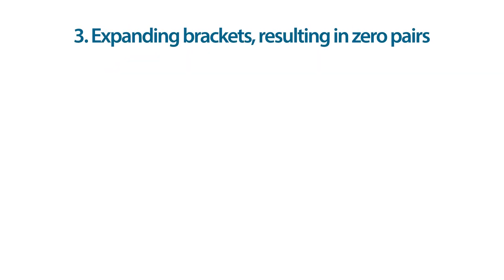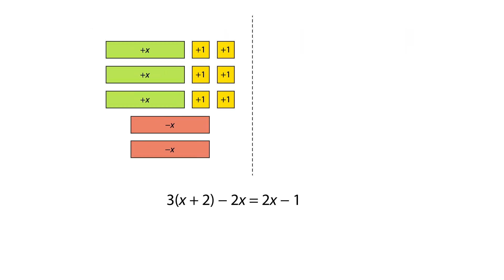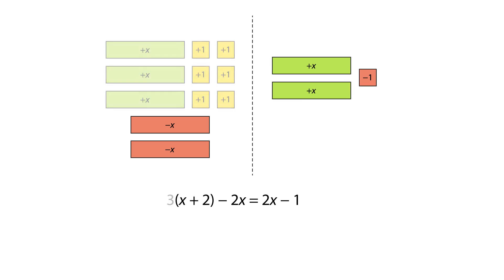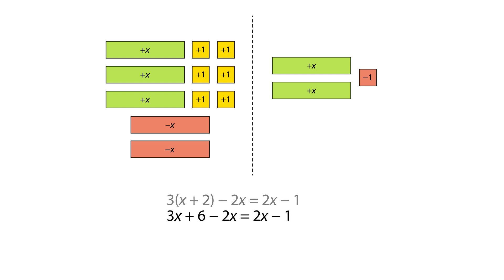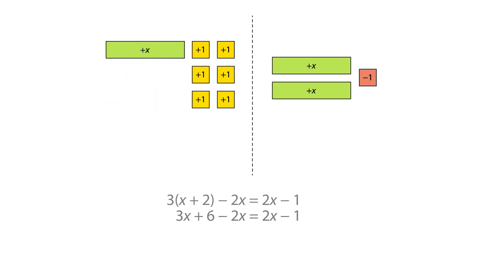In this next example, let's look at an equation that includes brackets. Algebra tiles can be used to represent the expression inside the brackets three times. We can then write the equation with the brackets expanded. We can simplify the left hand side of the equation by identifying and removing zero pairs. We can now write a simplified equation.